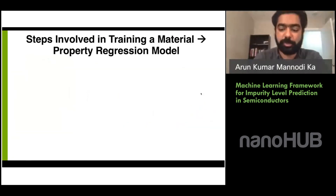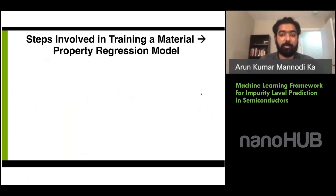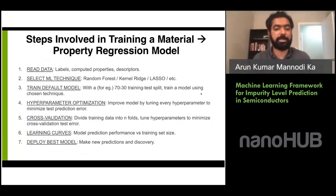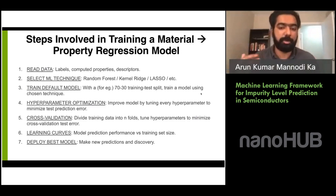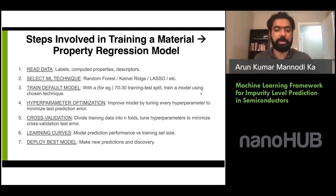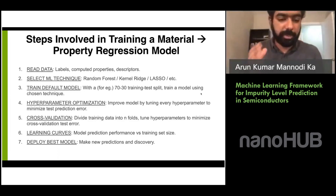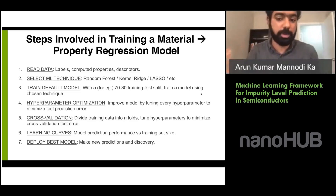Now let me show the different steps involved in training this material-to-property regression model. We start by reading the data — labels consisting of a given semiconductor, a given impurity, and the defect site, along with their computed impurity formation energies and transition levels. Then we select a machine learning technique: simple linear regression, LASSO, ridge regression, random forest, or neural networks. We train a default model using scikit-learn in Python, which provides pre-installed packages for all these techniques.